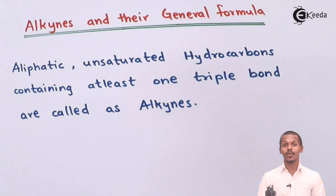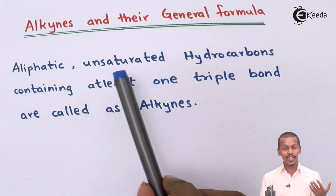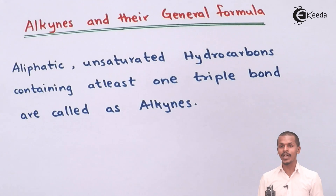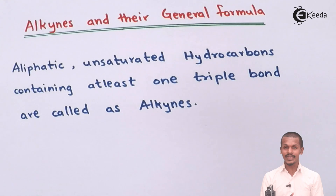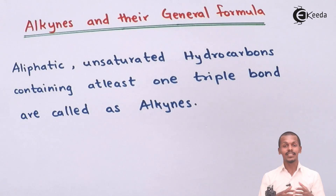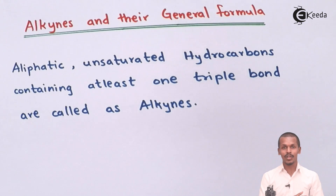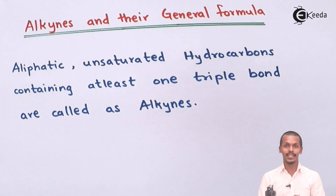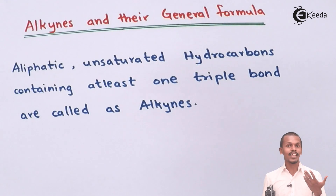So now we are going to do a topic on what is alkynes. Basically, alkynes are the aliphatic unsaturated hydrocarbons that contain at least one carbon-carbon triple bond. Aliphatic means straight chain or branched chain — they are not forming a cyclic or circular form of chain like benzene. So they are not cyclic hydrocarbons; they are aliphatic hydrocarbons, and they are called unsaturated hydrocarbons because they contain a carbon-carbon triple bond, which is why they are called alkynes.